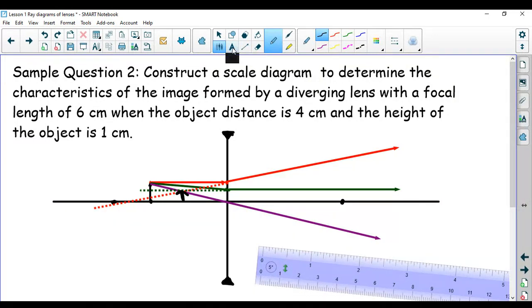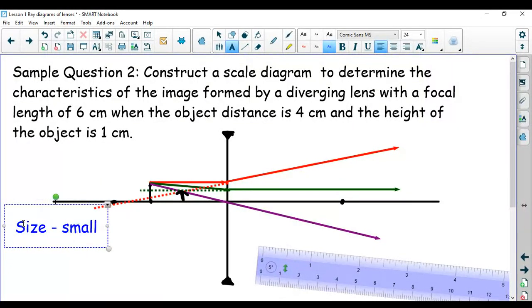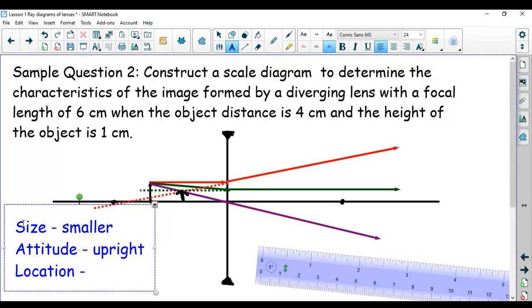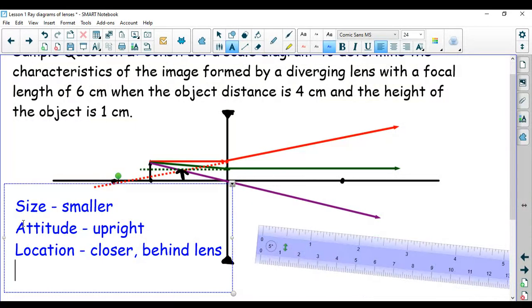And now I can describe it quite easily because it is definitely size wise, it's smaller. It definitely has an attitude of erect because it's right side up. Its location, well it is definitely closer or behind. And finally, we can say that its type is virtual. And there we go, an example done.